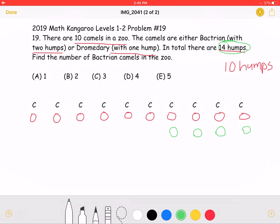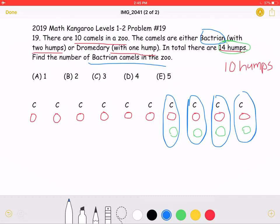The question asks for the number of Bactrian camels in the zoo, and again, Bactrian means it has two humps. So we have one, two, three, four camels with two humps.